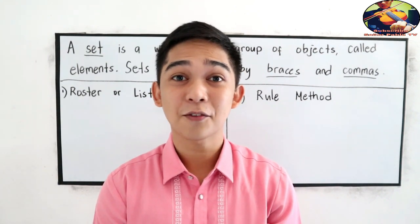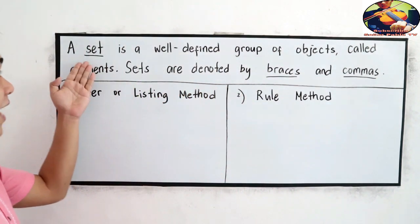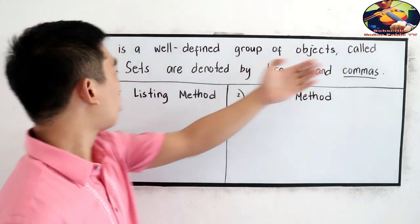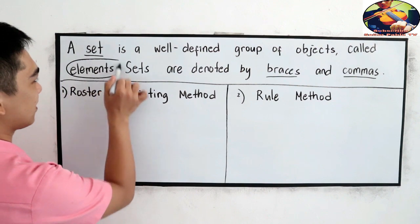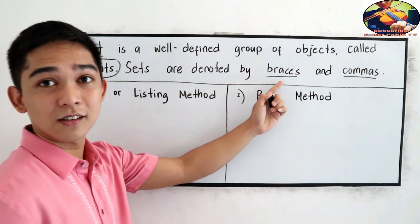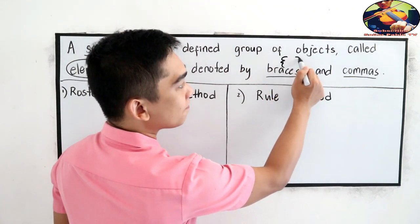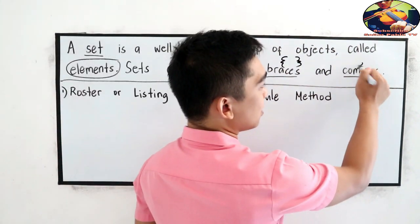First, let us define what is a set. A set is a well-defined group of objects called the elements. Sets are denoted by braces, so this is our symbol for braces, and commas, so this is for the comma.